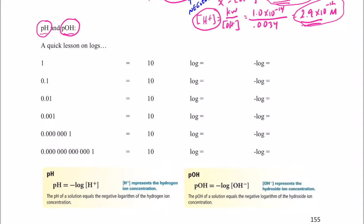Now I think you will agree that the number 1, if I want to write that as a power of 10, that would equal 10 to the 0 power. Now the log of that number is simply the power of 10 that equals that number. So in this case, the log would be 0. It's simply that number right there. Now the negative of that log is also 0 — we're not going to have a negative or a positive 0. And you'll see why I'm asking you to find the negative log here in just a few minutes.